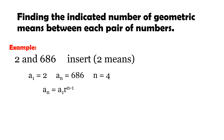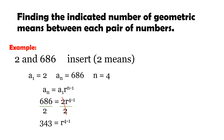Using the geometric sequence formula and substituting a-sub-n, a-sub-1, and n, this turns out as: 686 = 2 × r^(4−1). We divide everything by 2 to cancel it: 686 ÷ 2 = 343, and r^(4−1) remains. Since 4 − 1 = 3, we have r³ = 343.